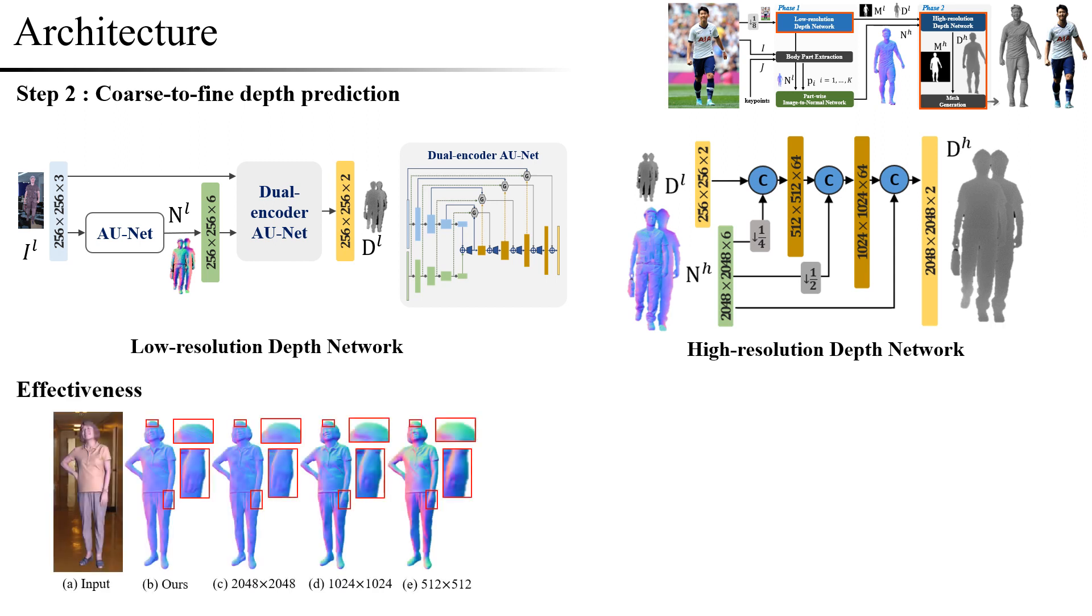The effectiveness of this method is as follows. First, you can see that the normal quality improves as the image resolution increases. Especially, as shown in images B and C, using part-based methods rather than simply using a high-resolution image allows the network to predict detailed normal of each body part. Additionally,